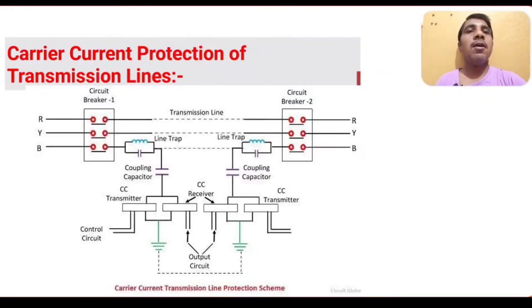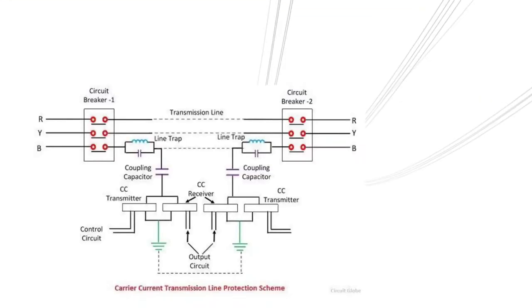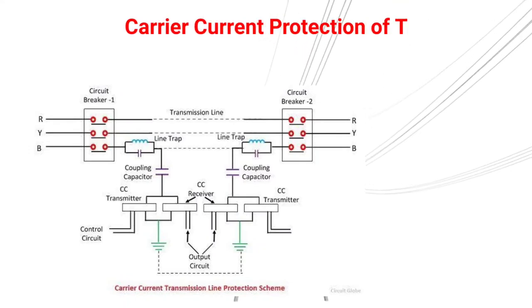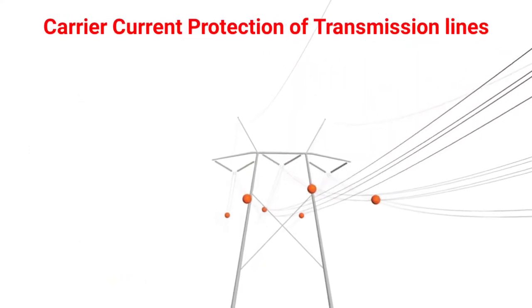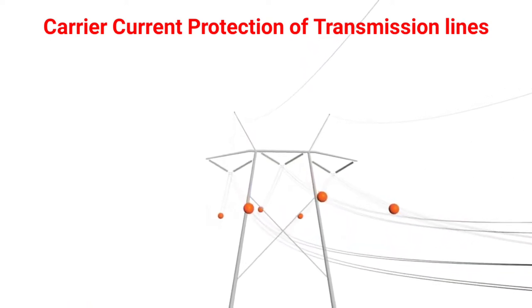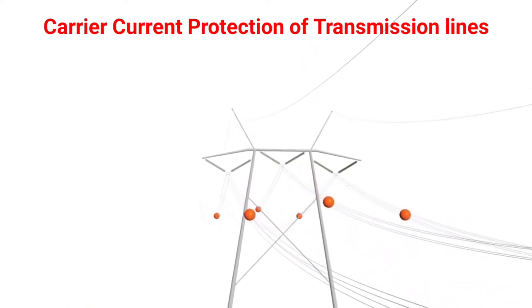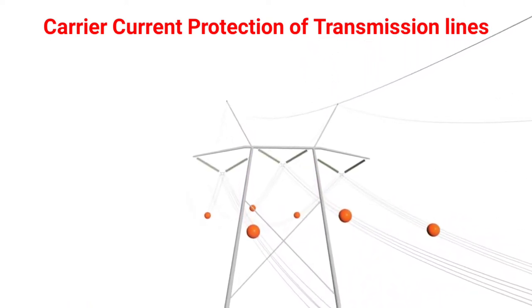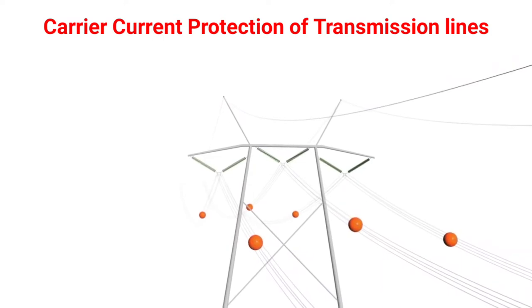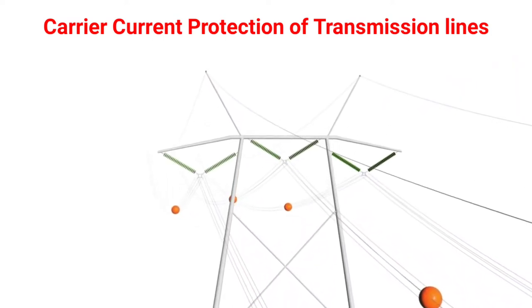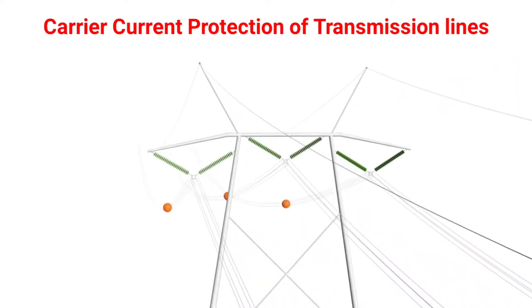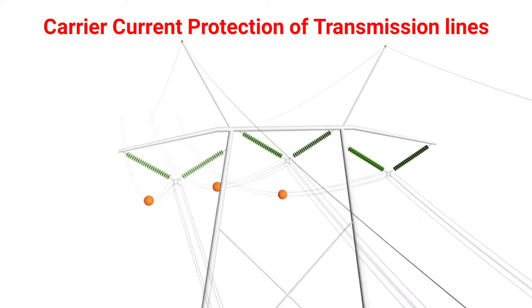So especially long transmission lines are protected with carrier current protection. Let us go for carrier current protection of transmission lines. As I told you, this scheme is mainly used for protection of long transmission lines. In the carrier current protection scheme, pilot cables are not used — unlike the differential protection scheme where pilot cables are used.